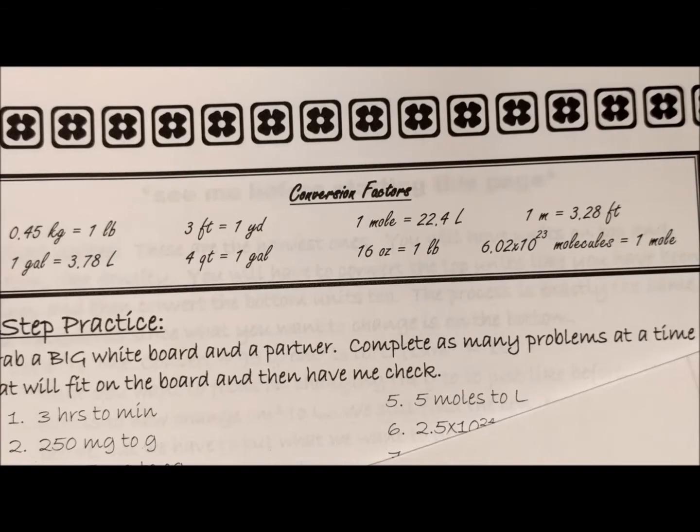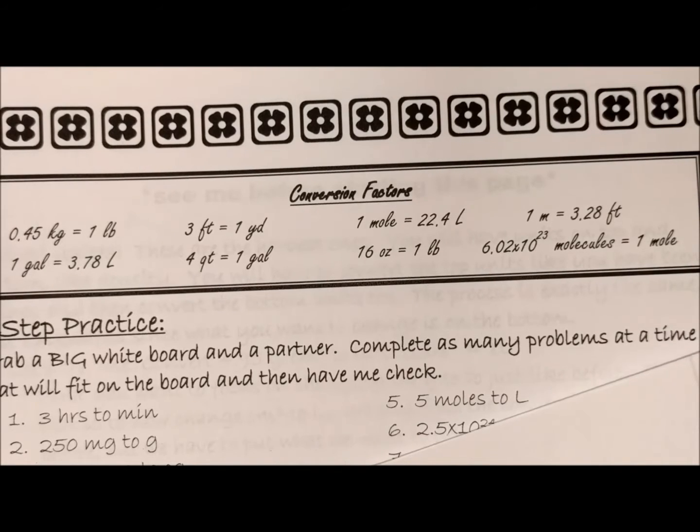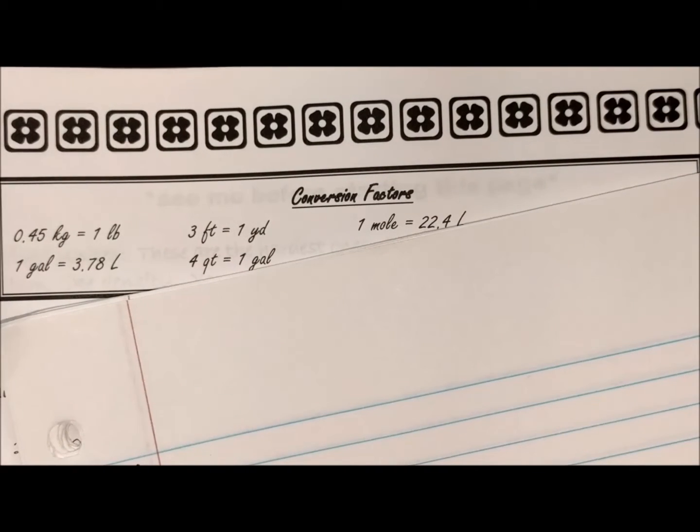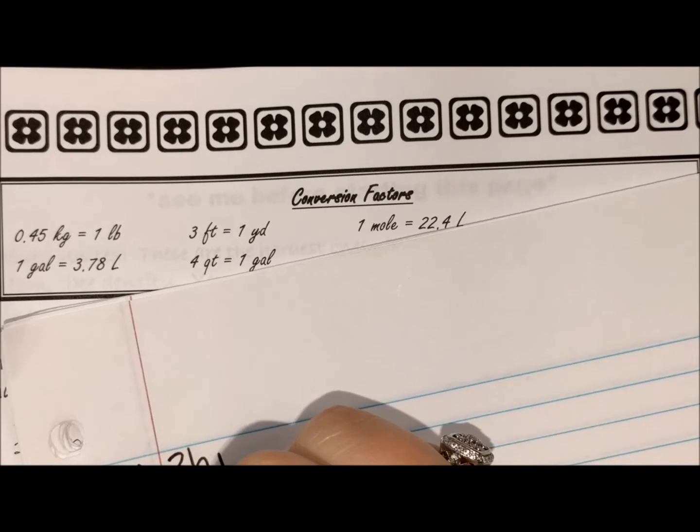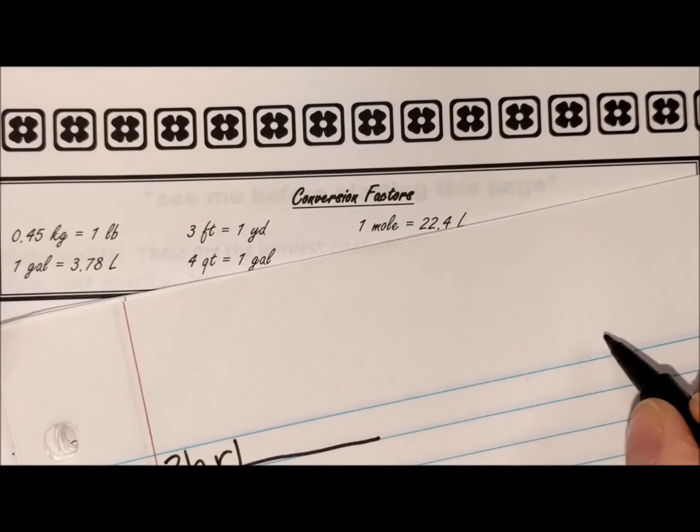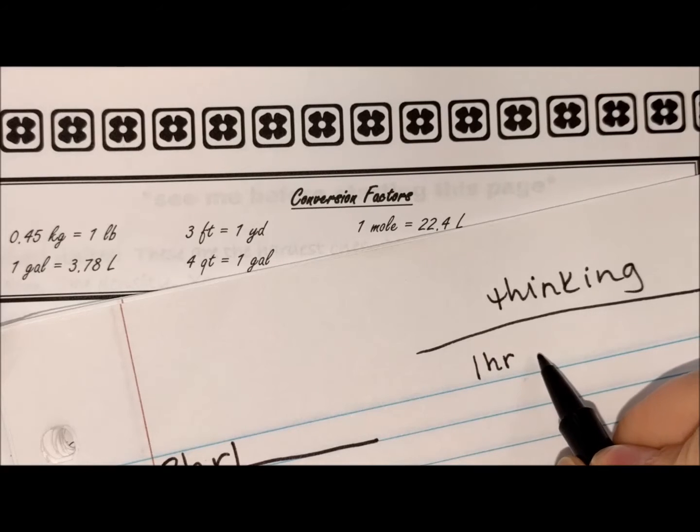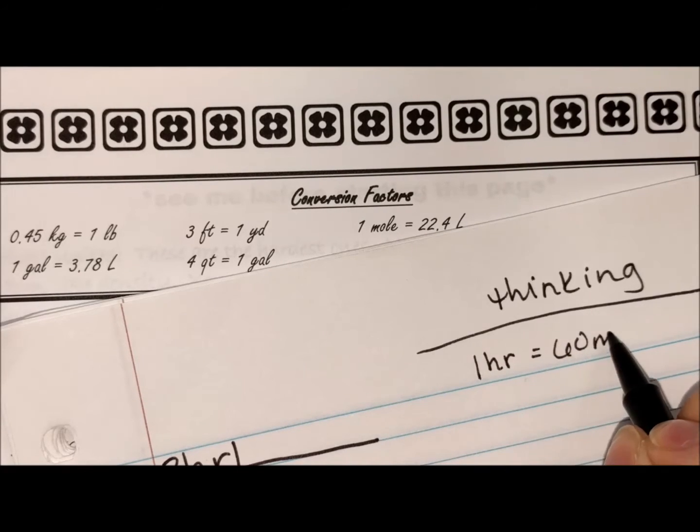Okay, so I'm going to do number one. It says three hours to minutes. So this is just like what we just did. We're going to write three hours down. We need to think about a conversion factor for hours to minutes, and I know that one hour equals 60 minutes.